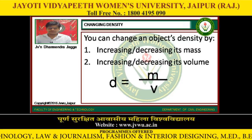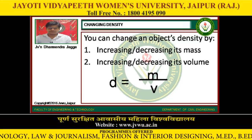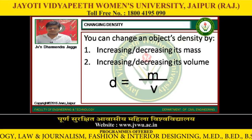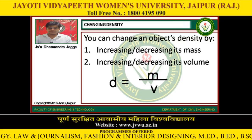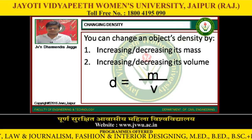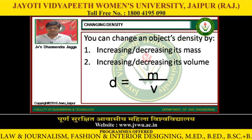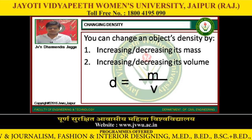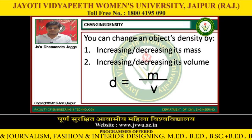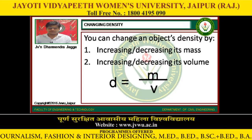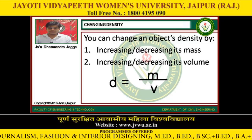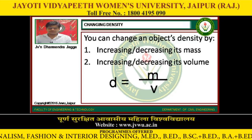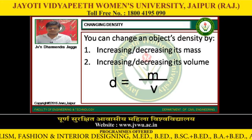You can change an object's density by increasing and decreasing its mass or increasing and decreasing its volume. If an object's volume is increasing, that means its density decreases.